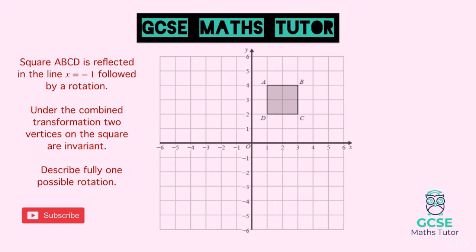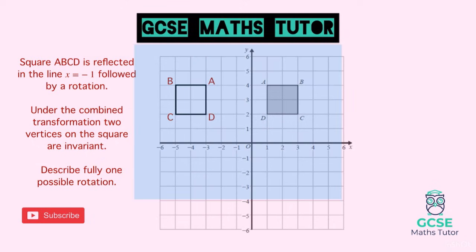This question specifies we're looking at vertices — the four lettered corner points of the square. First we do the reflection in x equals −1. Drawing the reflection, the square moves to a new position with A and D on the right and B and C on the left. Keeping track of the letters is helpful for the rotation step, as we want the labels to potentially match up for two vertices to land in the same place.